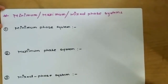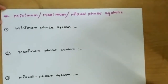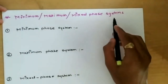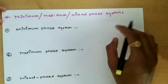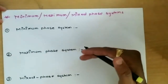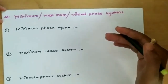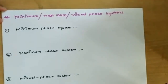Hello friends and welcome to our Electronic Katha YouTube channel. In this video we will discuss the classification of systems — that is, minimum phase, maximum phase, and mixed phase systems. These three systems can be classified based upon the locations of the zeros, and we will define them one by one, starting with the minimum phase system.